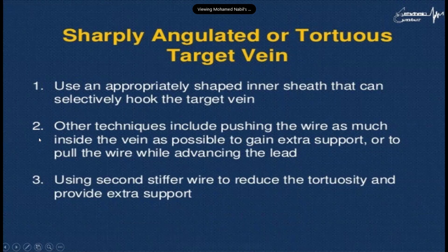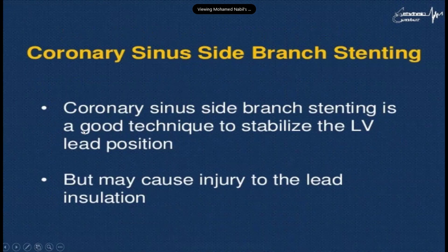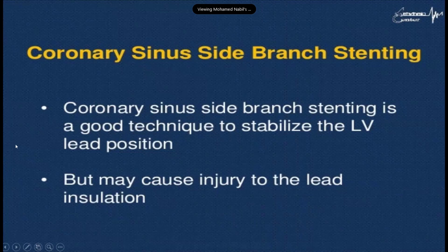Other techniques include pushing the wire as far as possible inside the vein, using a double wire for extra support, or using a stiffer wire to reduce tortuosity and provide extra support. The last option is coronary sinus side branch stenting, though it may cause injury to lead insulation and should be considered only as a last resort.